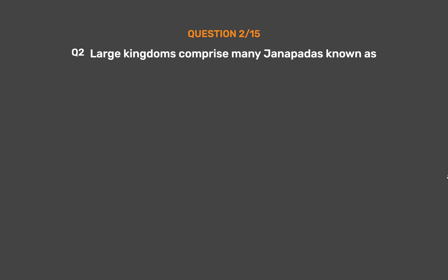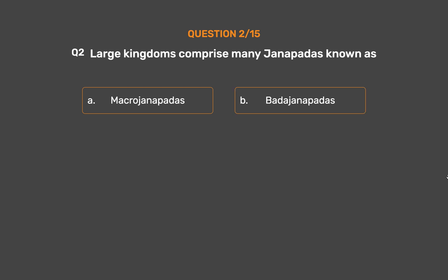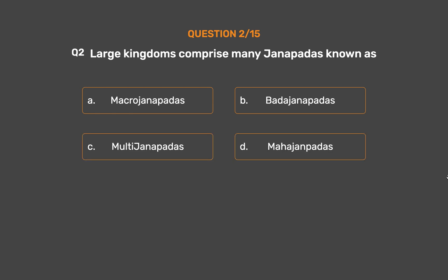Question No. 2. Large kingdoms comprising many Janpadas were called. Option A: Macrojanapadas. Option B: Badajanapadas. Option C: Maltijanapadas. Option D: Mahajanapadas. The correct answer is Option D: Mahajanapadas.